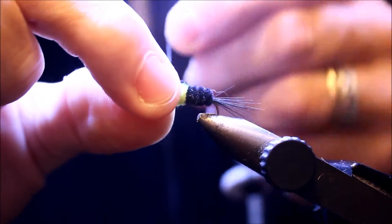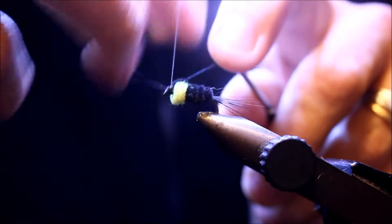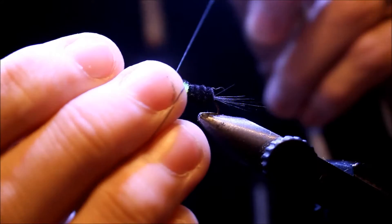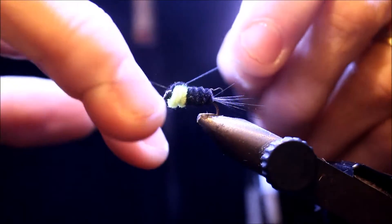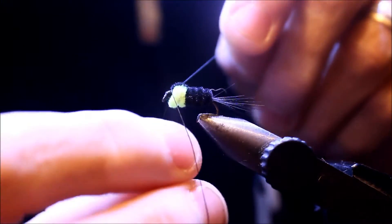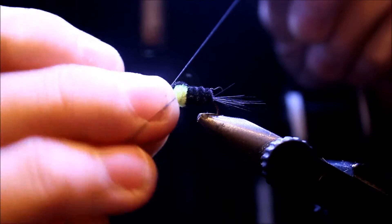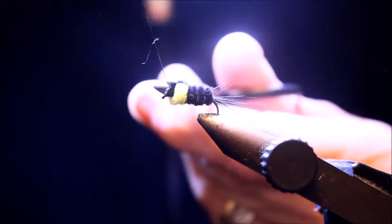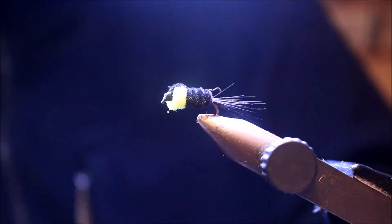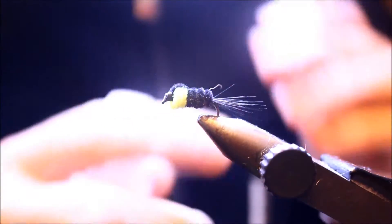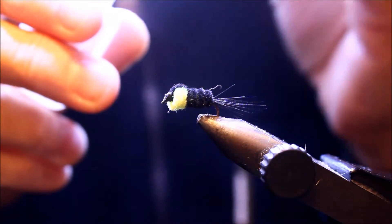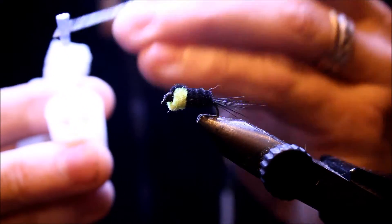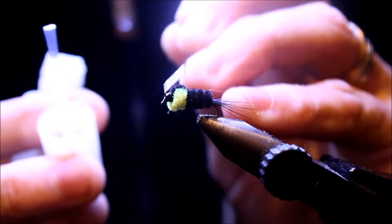Une petite demi-clé dans un premier temps pour bloquer, et un petit whip finish. On va refaire un deuxième. Maintenant je vais mettre une toute petite goutte de cyanolite sur la tête de façon à ce que le nœud ne se défasse pas.